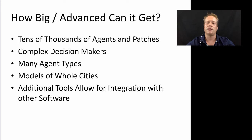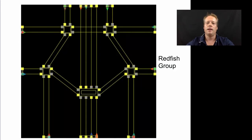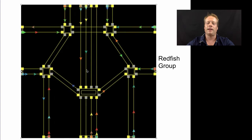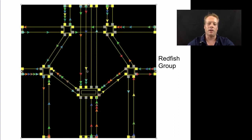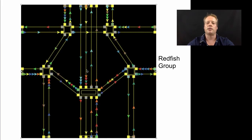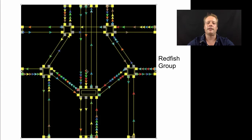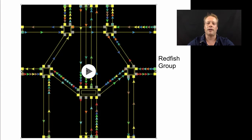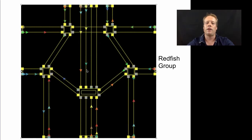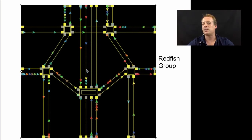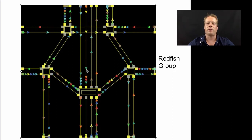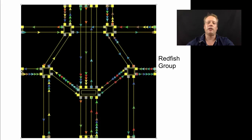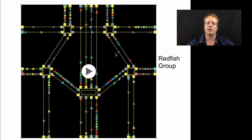One of the groups I really like that does a lot of agent-based modeling is a group called the Redfish Group, which builds a lot of models in NetLogo and uses them quite successfully to understand complex problems. This particular model I'm showing you is a visualization of a very complex traffic intersection, feeding naturally from the simple traffic model we were looking at before. It allows them to look at and try to understand whether a traffic network like this would actually work.